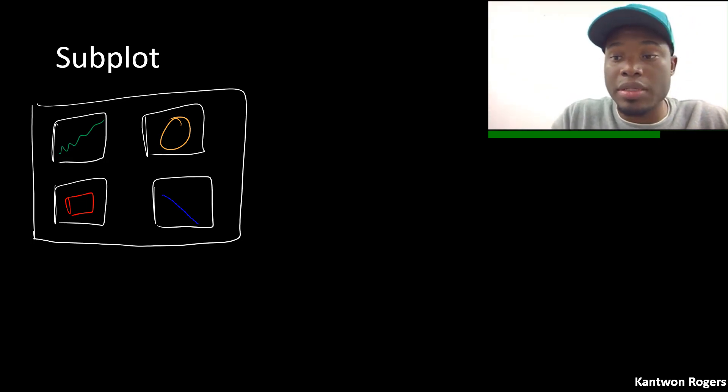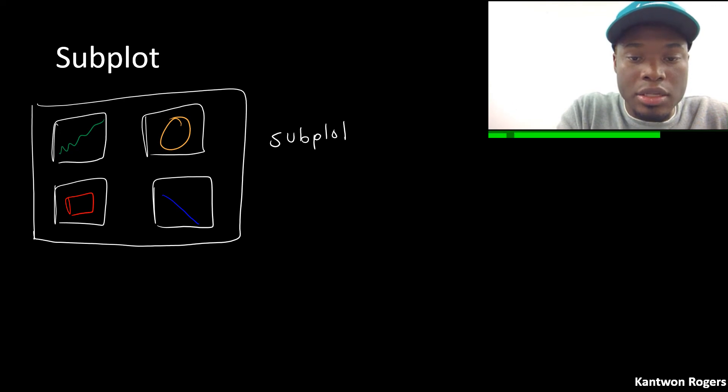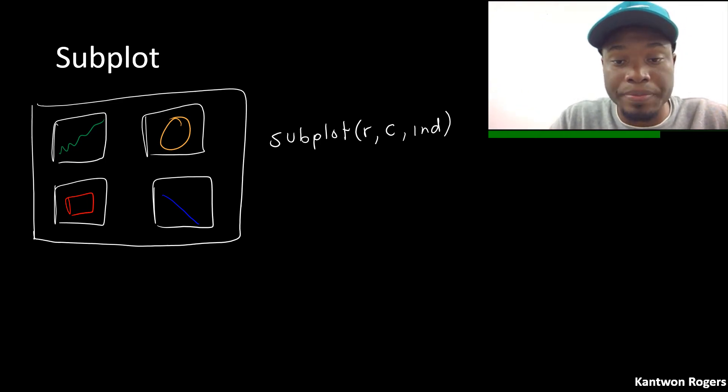So in order to do this I have to use the subplot command. Subplot has three inputs. The first one is the number of rows of my subplot. The second one is the number of columns of my subplot. And the third one is the index that I want to actually affect. So in this case here I'm creating a two by two subplot. And if I wanted to first start off with my green in that top left coordinate.